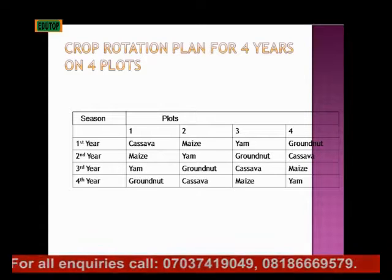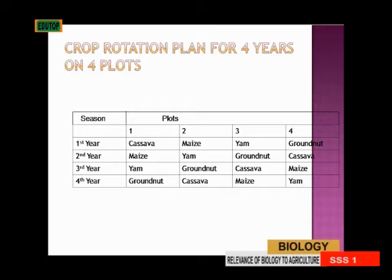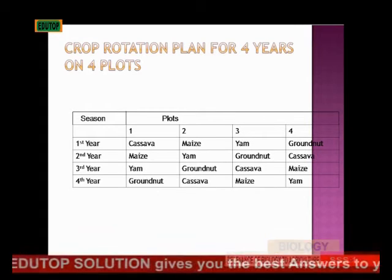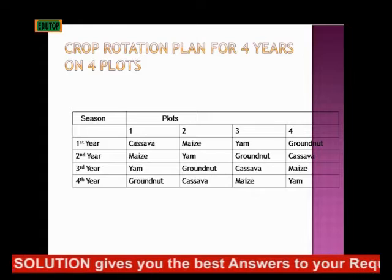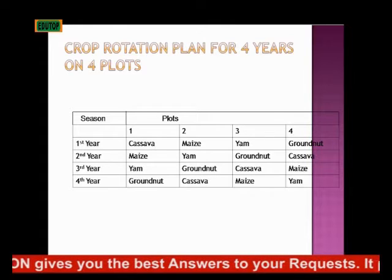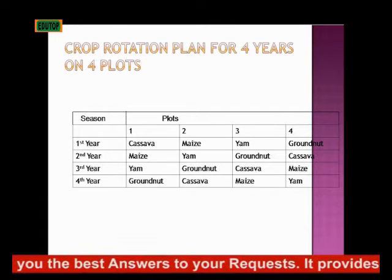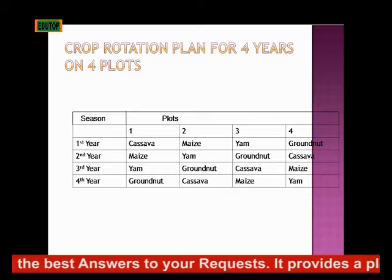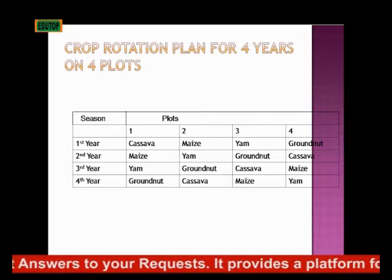Then in the third year, you plant your yam in the first plot, then groundnut in the second plot, cassava in the third plot, then maize in the fourth plot. Then for the fourth year, groundnut is planted in the first plot, cassava in the second plot, maize in the third, then yam in the fourth.